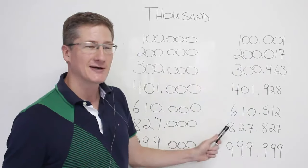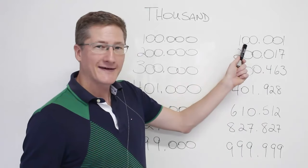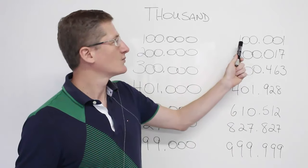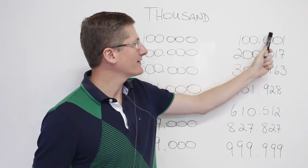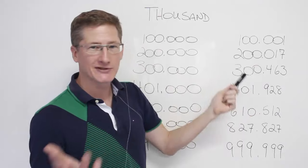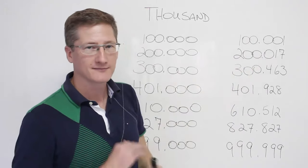So let's practice with some numbers after the thousand. Here we have, yes, 100,001, right? We have 100, and here we have 1. So where the comma is, we just say thousand. 100,001. That's it.